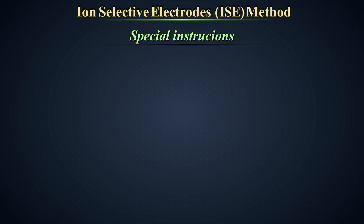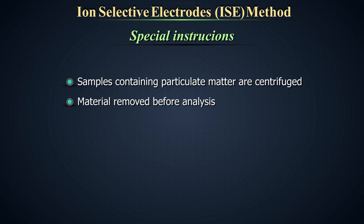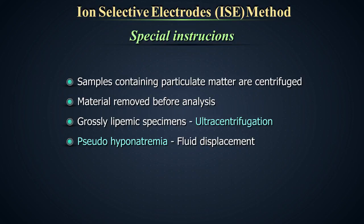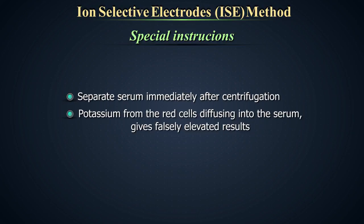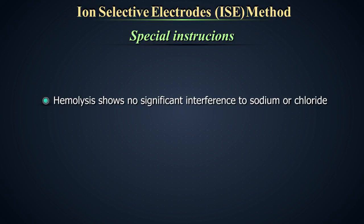Some special instructions. Samples containing particulate matter should be centrifuged and the material removed before analysis. Grossly lipemic specimens should be cleared by ultracentrifugation. Pseudohyponatremia may be seen with lipemic specimens as a result of fluid displacement. Separate serum immediately after centrifugation. Potassium from the red cells will diffuse into the serum, giving falsely elevated results. Hemolysis shows no significant interference to sodium or chloride.